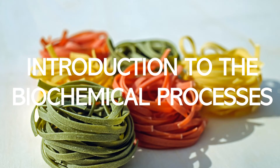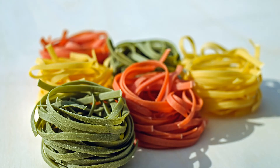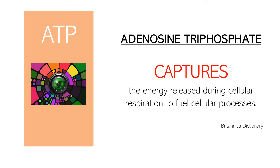We start with the introduction. According to the Biology Dictionary, cellular respiration is a process through which cells convert sugars into energy, ATP. It further states that ATP and other forms of energy power cellular reactions. According to the Britannica Dictionary, ATP captures the energy released during cellular respiration to fuel cellular processes.